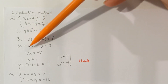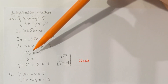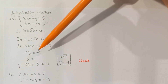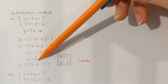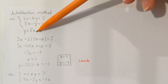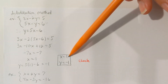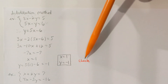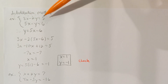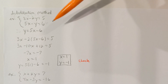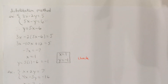Substitute 5x − 6 into the top equation where we see y, and solve for x. Distribute negative 2 into the two terms, collect like terms, and subtract 12 from both sides — you get −7x = −7. Dividing both sides by −7 gives x = 1. Knowing x is 1, substitute into the substitution equation: 5 − 6 = −1, so y = −1. Checking: 3 − (−2) = 5 — true; and 5 − (−1) = 6 — also true. So x = 1, y = −1 is correct.